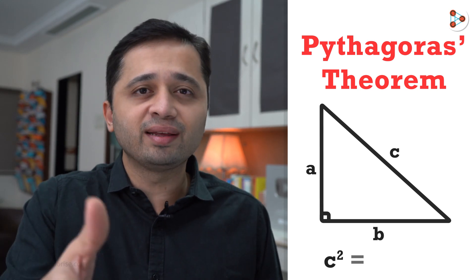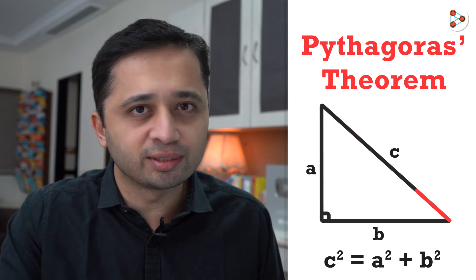In maths, we all know about the Pythagoras Theorem. It says that if we have a triangle with sides a, b and c, then c squared gives us a squared plus b squared, where c is the hypotenuse.